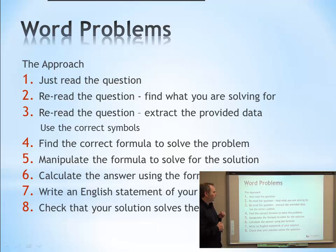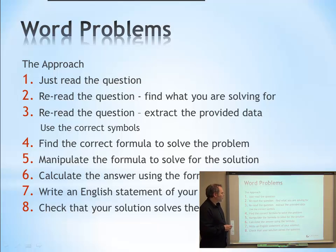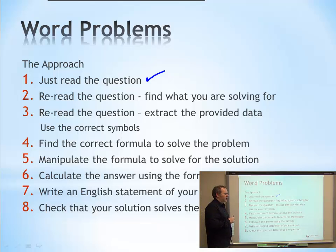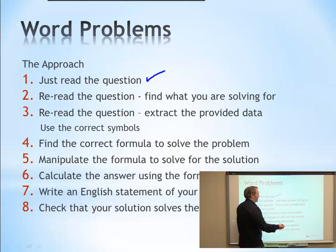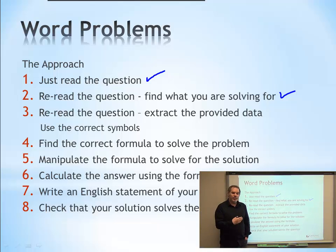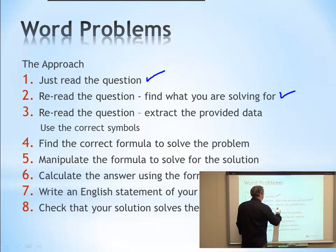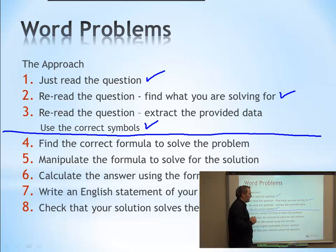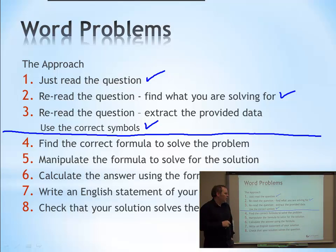We're going to do a couple of examples, but first let's look at our approach for word problems. First, read the question once to understand the context. Then re-read the question to find what you're solving for, and write it down. Re-read again to extract the data provided, using the right symbols. Write down all the information given. At this point you've done all your analysis — you know the context, what you're solving for, and the data you'll use. Now you're ready to actually do the solving.